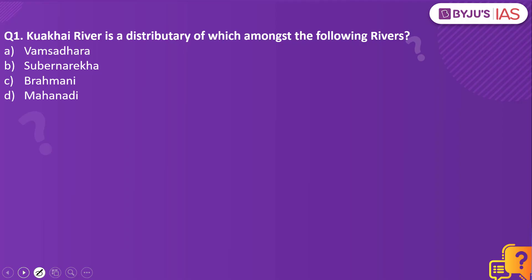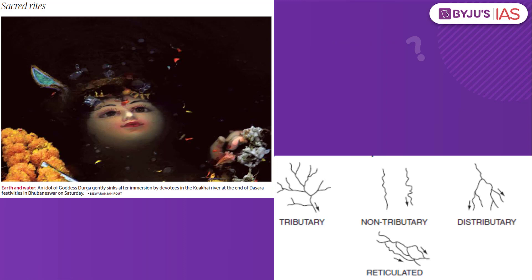Kyukai river is a distributary of which amongst the following rivers? Vamsadara, Subranareka, Brahmani, Mahanadi. The answer to this is Mahanadi. This article here makes a mention of Kyukai river. Kindly remember Kyukai river is a distributary of Mahanadi river and it flows through the state of Odisha.